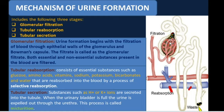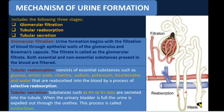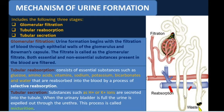The second stage is tubular reabsorption. The filtrate passes through the proximal convoluted tubule, where essential substances such as glucose, amino acids, vitamins, sodium, potassium, bicarbonates, and water are reabsorbed. Since essential substances were also filtered during glomerular filtration, they need to be reabsorbed here in the proximal tubule. This process is called selective reabsorption.